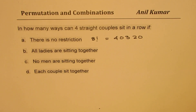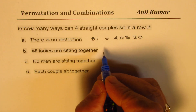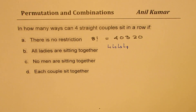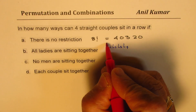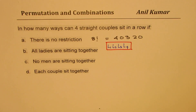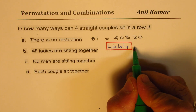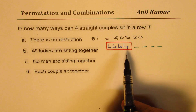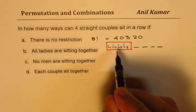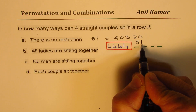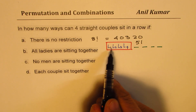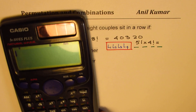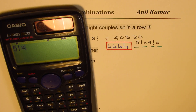For Part B — all ladies sitting together — we club the 4 ladies into one group. With that group plus 4 men, we have 5 units to arrange, giving 5 factorial ways. The 4 ladies within their group can be arranged in 4 factorial ways. So the answer is 5 factorial times 4 factorial, which equals 2,880.